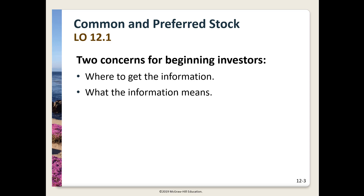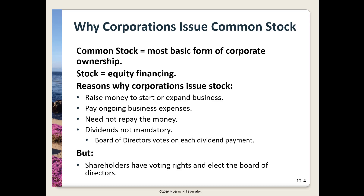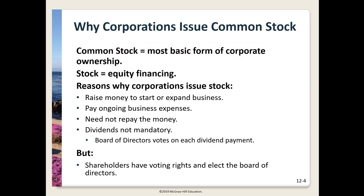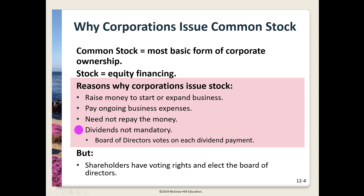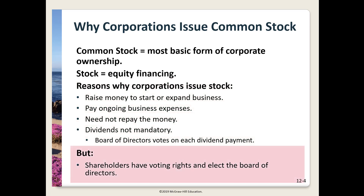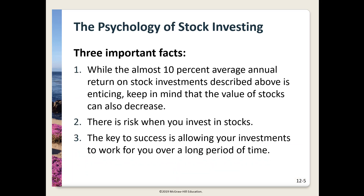Common stock is called equity because as an owner of a share of common stock, you are an owner of the company — you share in its profits. Firms issue common stock to raise funds to start a new business or to expand. The pluses are that the funds have no maturity, they don't have to be repaid, and dividends are not an obligation. The downside is that stockholders vote and can affect the direction of the firm, which can be tough for entrepreneurs who no longer have total control.